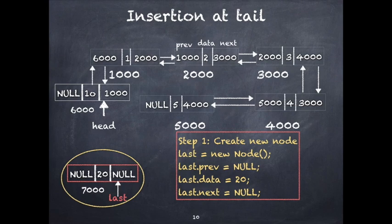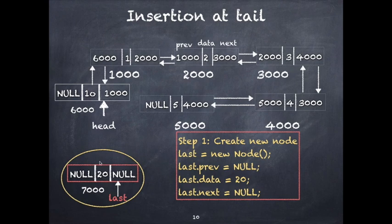For insertion at tail, you are inserting a new node at the tail. The first step is to create a node. I've named this node 'last', so last equals new node. Then set last.previous to null, last.data to 20, and last.next to null.